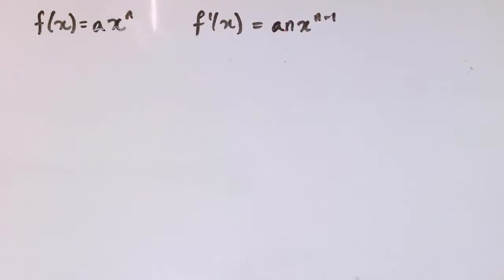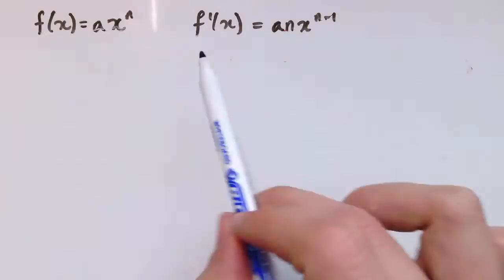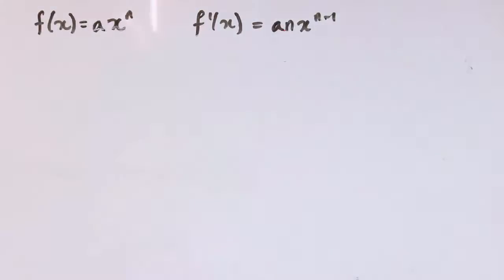In this video we can look at some harder applications of using this formula for the gradient: f(x) equals ax to the n gives a gradient function or derivative of anx to the n minus 1.